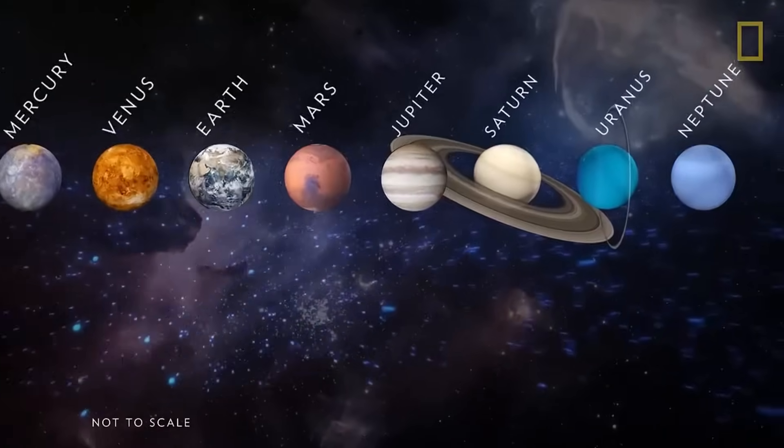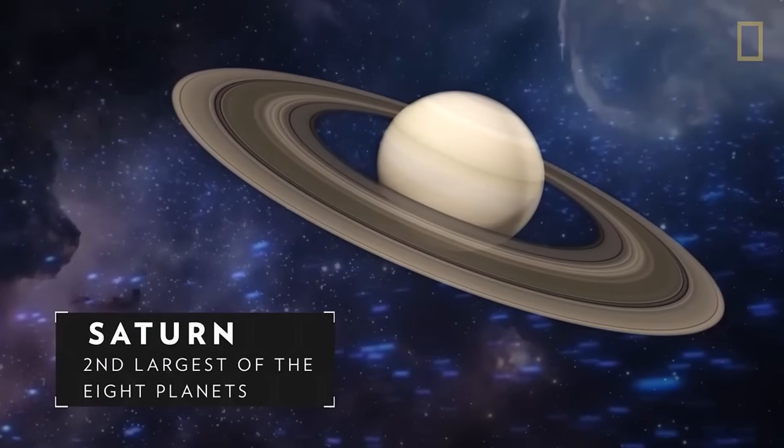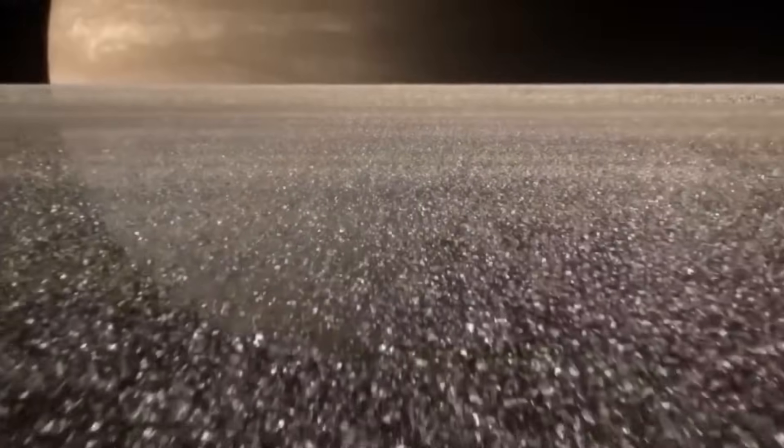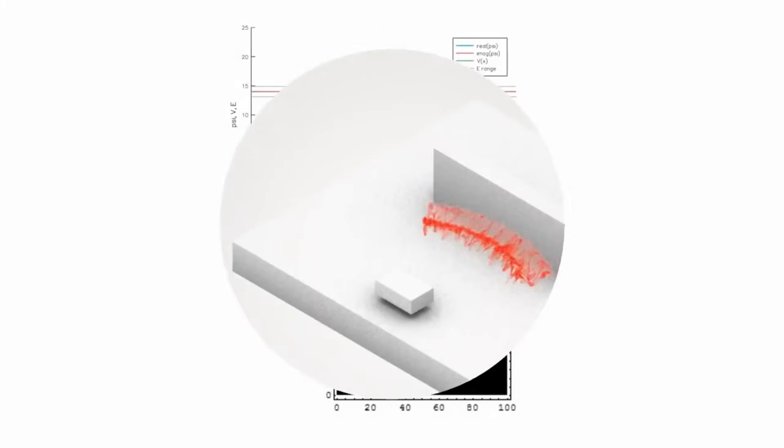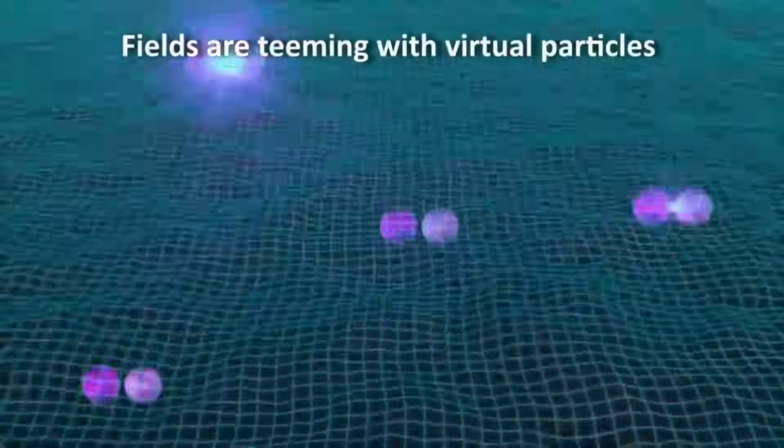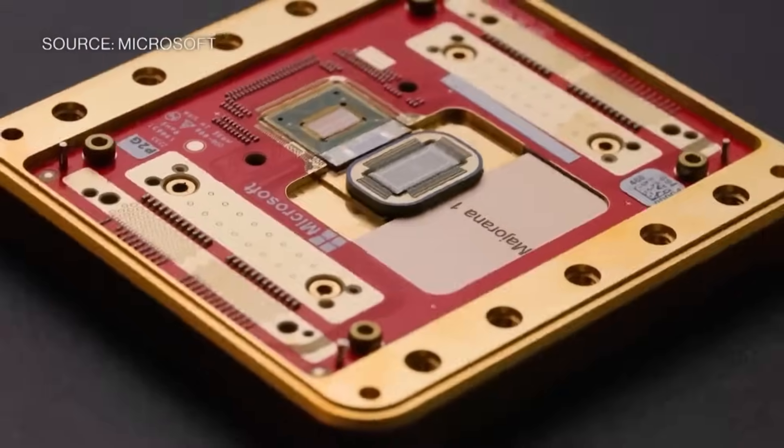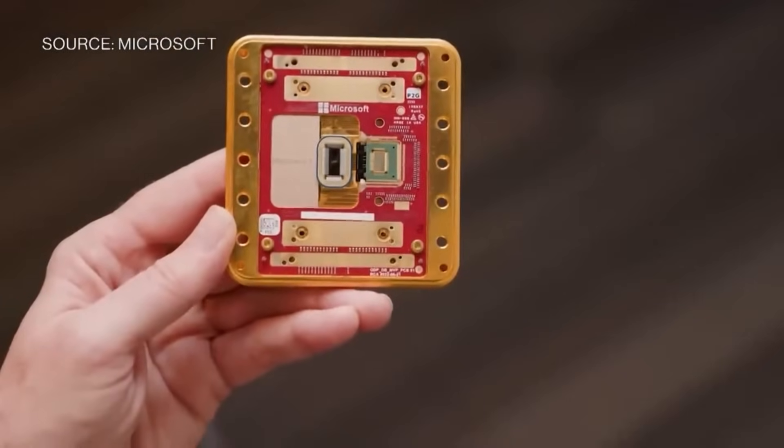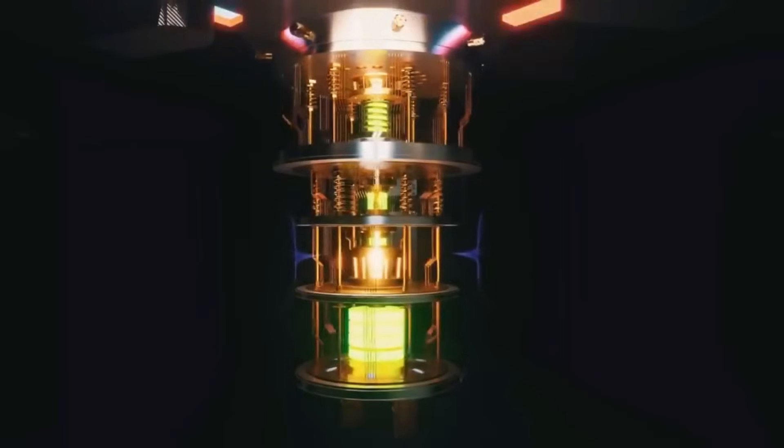By directing specific energy patterns toward the rings, perhaps via high-frequency EM bursts or low-energy particle beams, we might be able to create phase perturbations and then scan for responses. If we observe mirrored or altered patterns in subsequent coherence scans, it could confirm a bidirectional link.